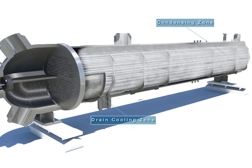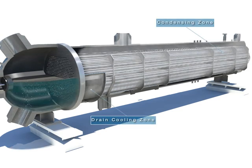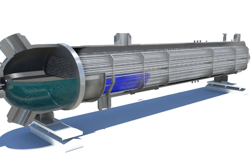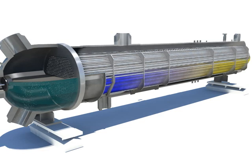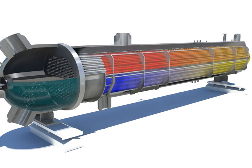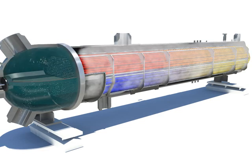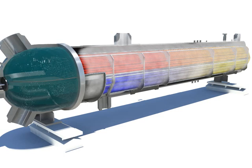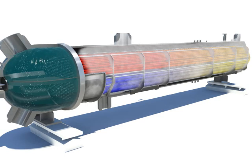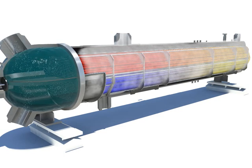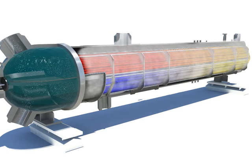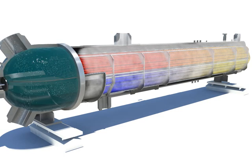The drain cooling zone and condensing zone are sections of the high-pressure feedwater heater. The drain cooling zone is located at the feedwater inlet, and the condensing zone has the largest heating area among the other heating areas of the feedwater heater.